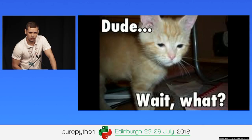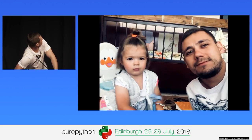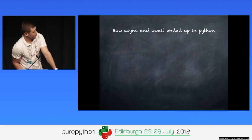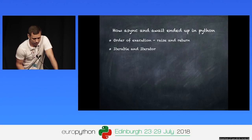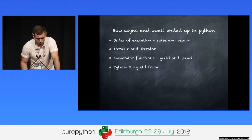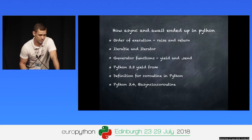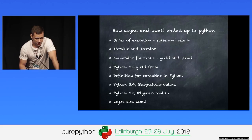My first thoughts were: what if I have to explain this to someone else? This is a picture of me and my niece Ralitza — she's two years old. So what if I have to explain to her what a coroutine is? I will have to start with the basics. In this talk, we are going to talk about order of execution, the iterator protocol, generator functions, yield from, then we will make a definition of a coroutine in Python, look at the asyncio.coroutine and types.coroutine decorators, and finally talk about async and await.